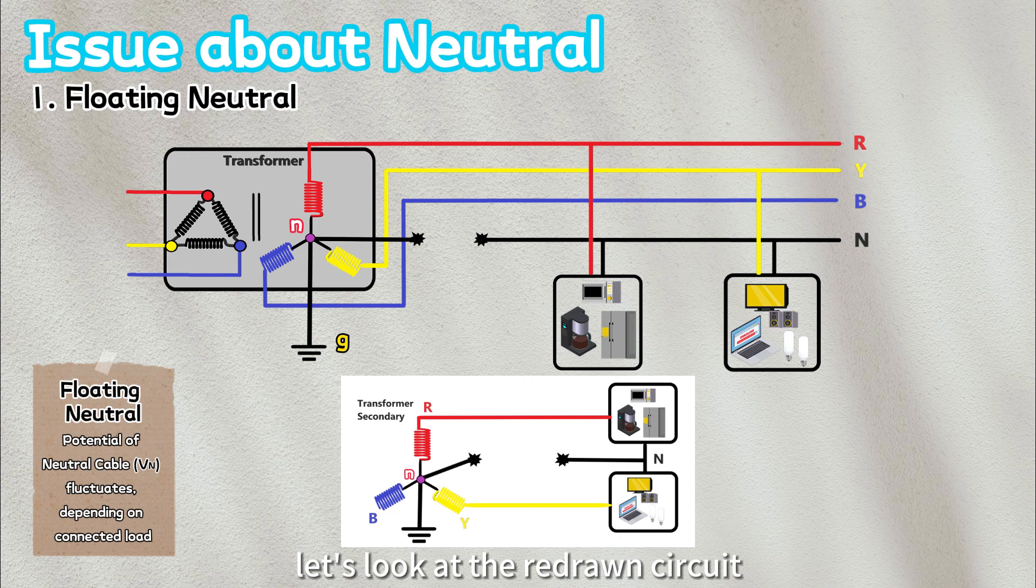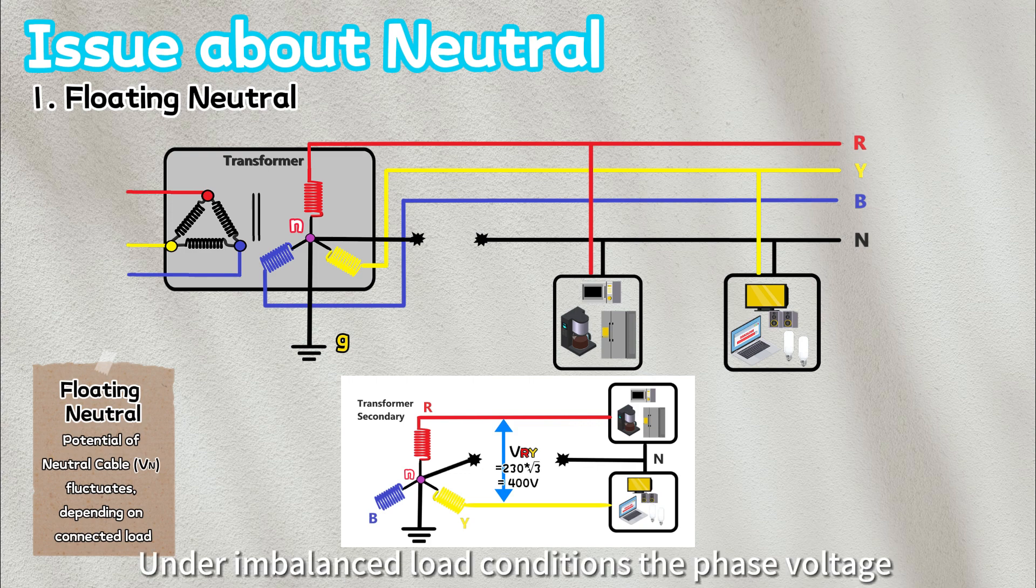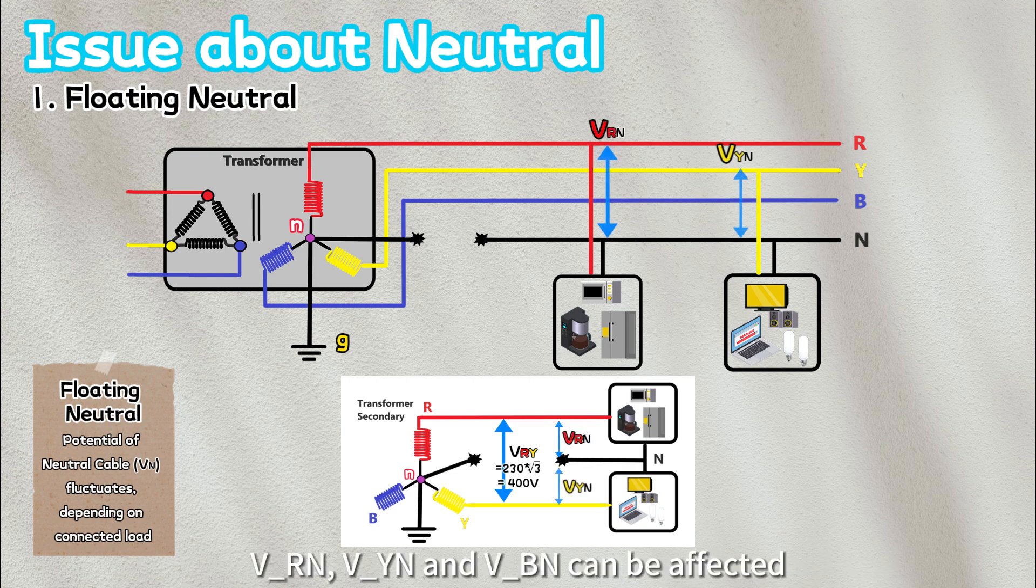For easier understanding, let's look at the redrawn circuit. In this scenario, the equipment for single-phase system will be sharing the line-to-line voltage at 400 volts and the broken neutral will be acting as linking medium in between. Under imbalanced load conditions, the phase voltage, VRN, VYN, and VBN, can be affected.